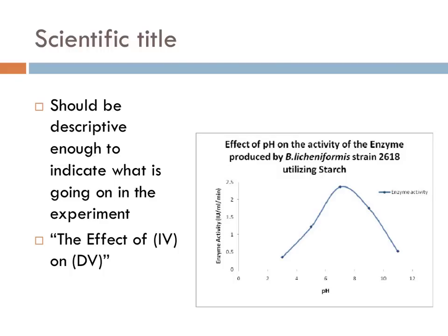The title for a scientific experiment should include both the independent and dependent variables. Someone looking at an experiment or graph's title should have a really good idea of what was being tested without reading any further. In the graphic to the right, a title such as 'Acids, Bases, Bacteria, Oh My' might sound witty or cute, but it doesn't clearly describe what's being tested. A title like 'The Effect of pH on the Activity of the Enzyme Being Produced' indicates the independent variable, the dependent variable, and leaves very little to question.